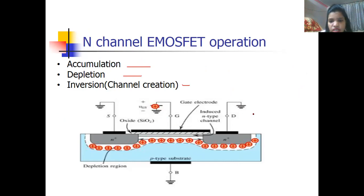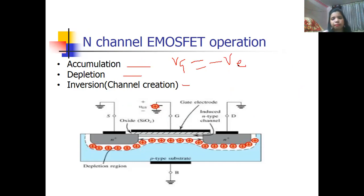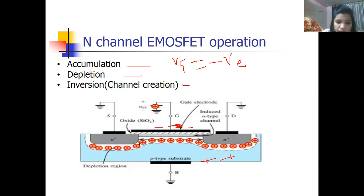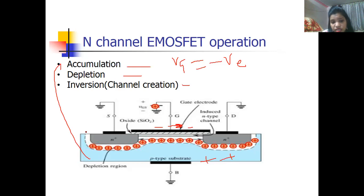In the first condition, VG is applied as negative. The substrate is P type, so the majority carriers are holes, which carry a positive charge. Since positive is attracted to negative, all the holes accumulate near the gate region. This is called accumulation mode — holes are accumulating in this region.